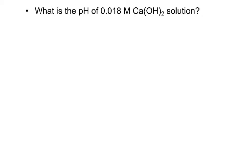In this first example, we want to calculate the pH of a 0.018 molar calcium hydroxide solution. So the first thing I want to do is write the equation for what's going on when the calcium hydroxide dissolves in water. It's an ionic compound, so it completely breaks up into the calcium ions and the hydroxide ions.